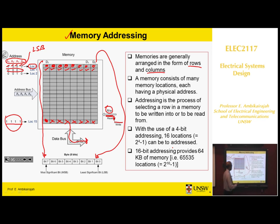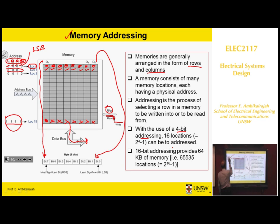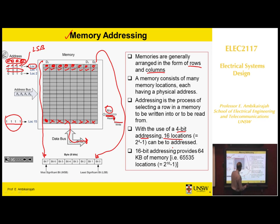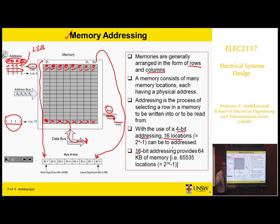If you have four-bit addressing, that means you have four address lines — A0, A1, A2, A3 — and you can have 16 memory locations. If you have 16-bit addressing, then you've got 2 to the power 16 memory locations, so the memory can be very, very large.